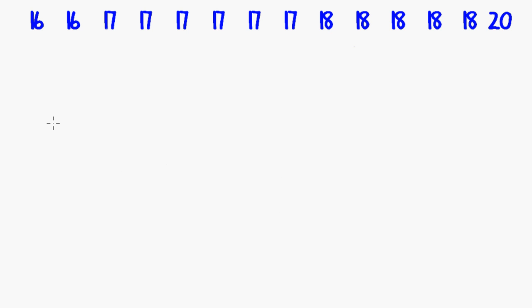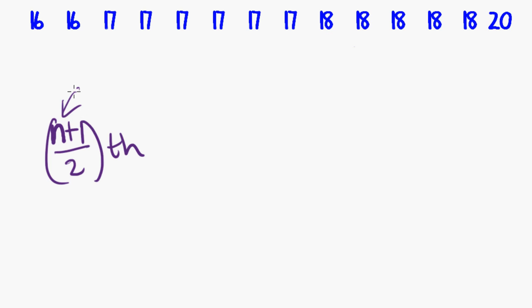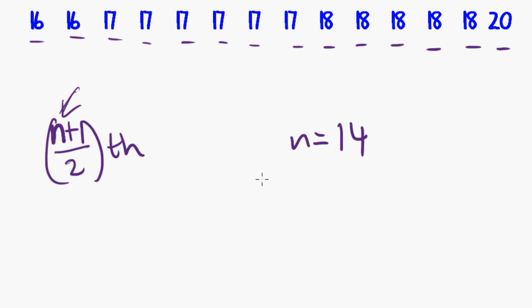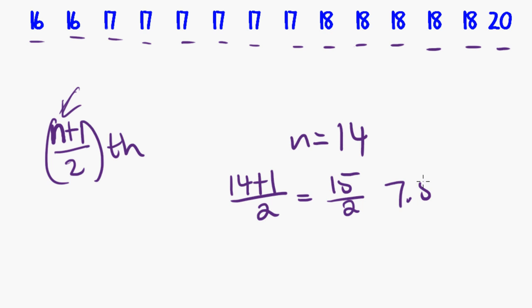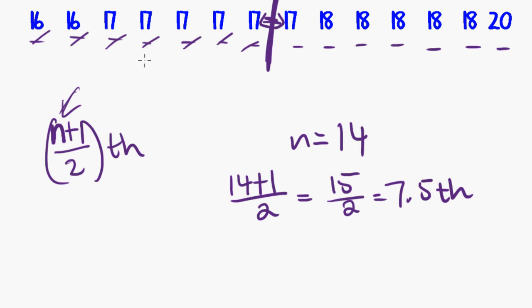So we say that n is the number of observations in our data set. What we do is say n plus 1 divided by 2 — that position in the data will give us the halfway point. Here's that data again. There are 14 data points, so n is 14. So I do 14 plus 1 divided by 2, which gives me 15 divided by 2, which is 7.5. So I want the 7.5th position into the data, meaning halfway between the 7th and 8th values. That gives me halfway between 17 and 17, which is just 17. So that's my median.